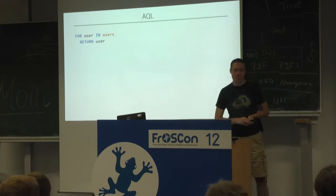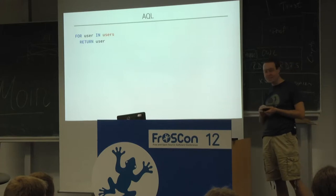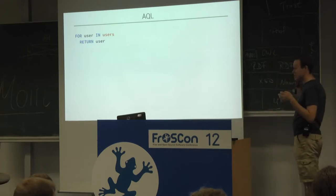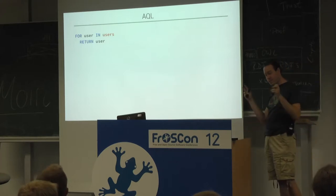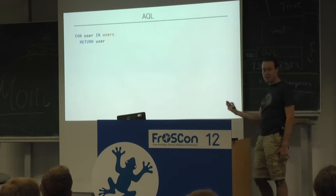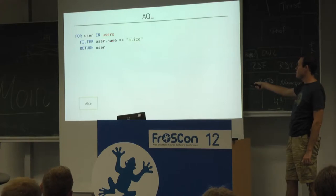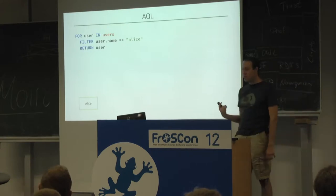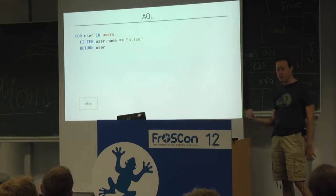Let's talk about the query language AQL, inspired by languages that take the programmer's point of view with iterators. We start with FOR loops — the simplest query is: for every user object in the users collection, just return the element, which is a simple SELECT * FROM users. Of course we can apply filters — for example, only return users where the name is Alice. The AQL optimizer is clever enough to figure out there's an index stored on name and use it, so the query will be fast when indexed.